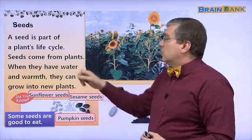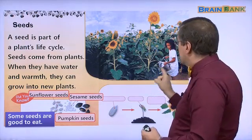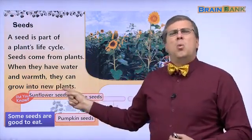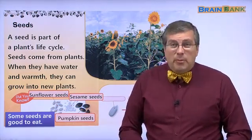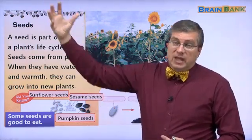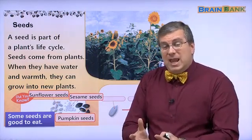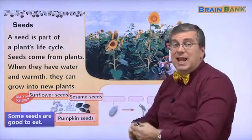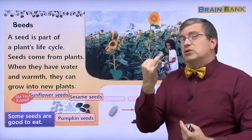Seeds come from plants. When they have water and warmth, they can grow into new plants. So seeds need two things: one thing is water, the second thing is warmth. Where do seeds get warmth? They get it from the sun.